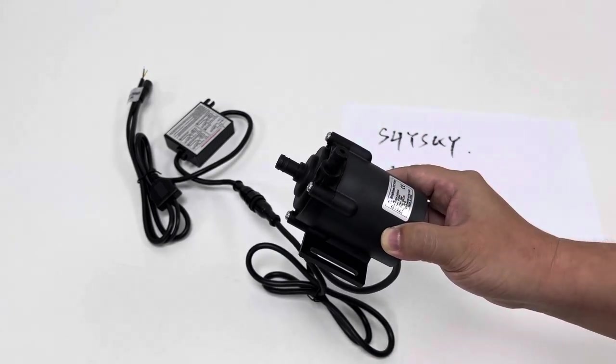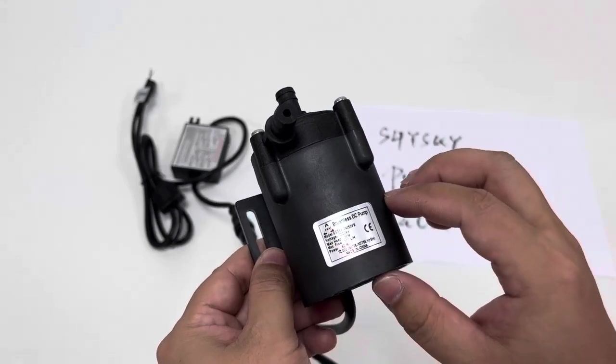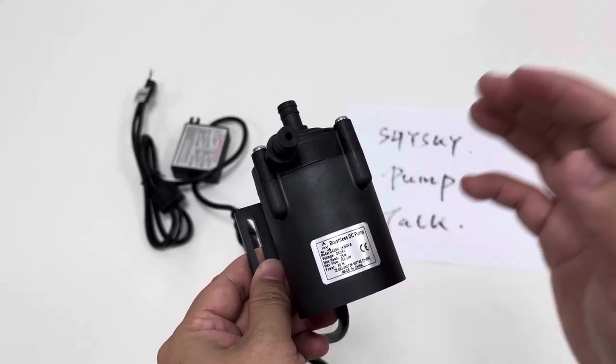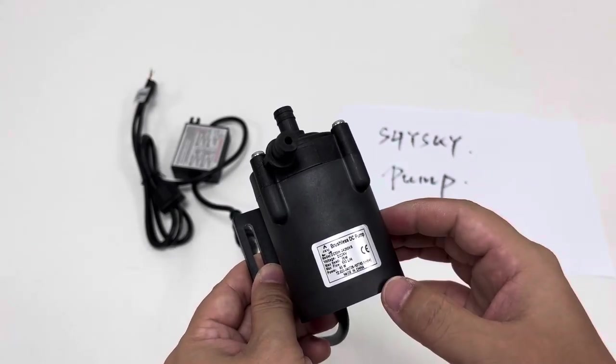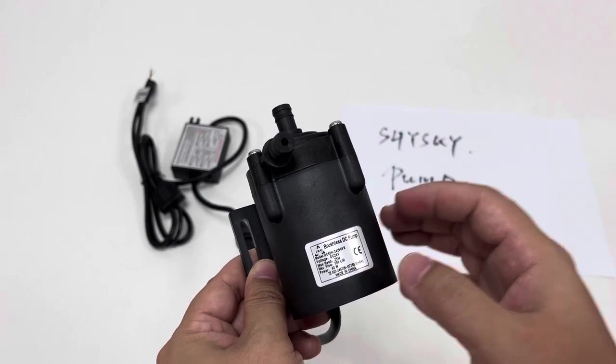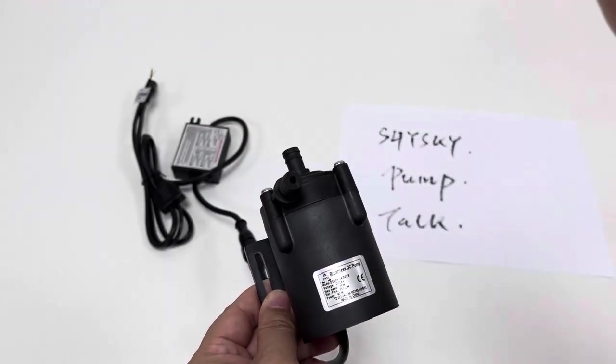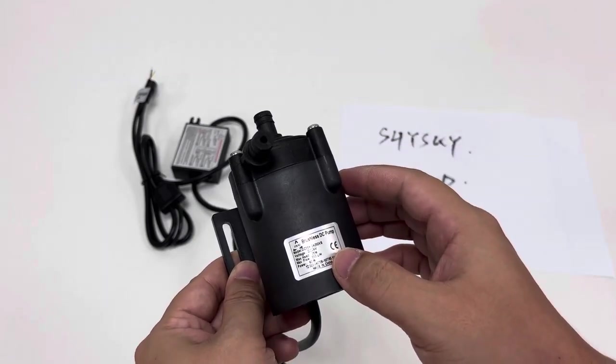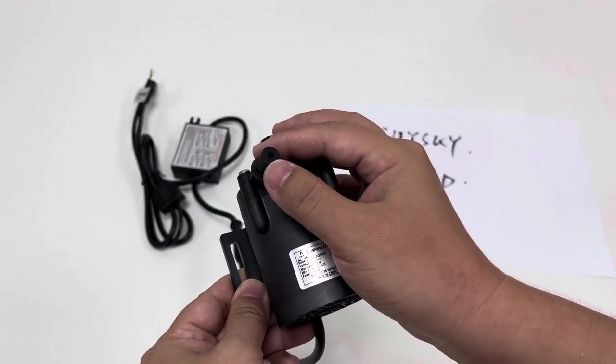But the flow rate value will be quite low. As we can see on the sticking label, 24 volts DC, the rated power 80 watts, limited working current about 3.3 amps. And the max static lift can reach up to 25 meters. So it is quite high lift value, but the max whole rhino flow rate is just about 550 liters per hour. So quite low flow rate.